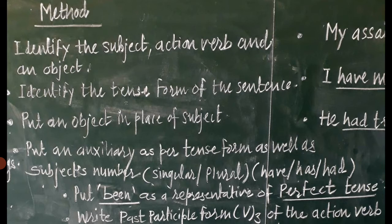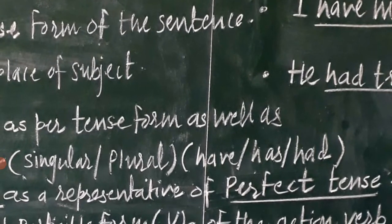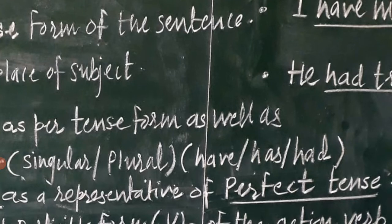Afterwards, put the object in place of subject — this is the first and foremost rule. Then put an auxiliary as per tense form as well as the object's number, singular or plural. In the context of perfect tense, the auxiliaries are 'have,' 'has,' and 'had.' If it is present perfect, then 'have' or 'has.' If it is past perfect, then 'had.' And if it is future perfect, then 'shall have' or 'will have.' This is how you choose the auxiliary.